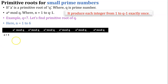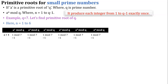Let us start finding the primitive roots. First, a equals 1. When the base value is 1, any power gives an answer of 1, so all equations give answer 1. Our condition is not satisfied because a raised to n mod q must produce each integer from 1 to q-1 exactly once, but here the answer is the same for all equations.